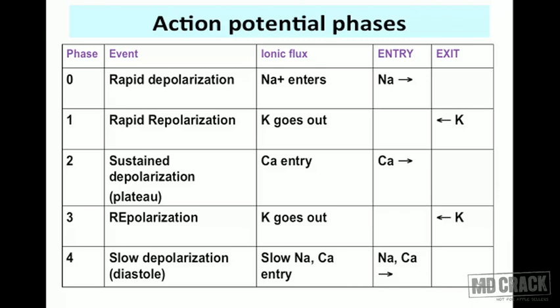Let's go to the slide. You need to understand these basic things so later it will feel easy. Here are the action potential phases: 0, 1, 2, 3, and 4. The third column on the slide shows ionic flux. During phase 0, sodium enters the cell — that entry is represented by a rightward arrow — and this sodium entry triggers rapid depolarization, giving you the upstroke.